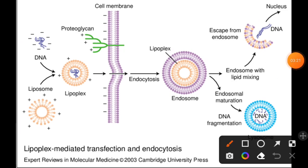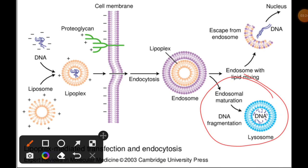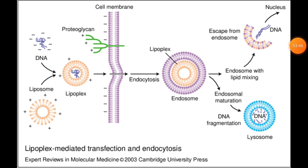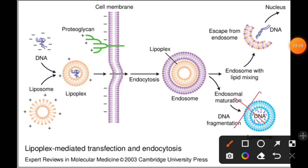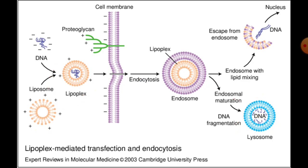To address the risk of lysosomal degradation, it is often suggested to treat the particular cells where we are transferring the lipoplex with cytochalasin B, colchicine, and chloroquine. These compounds will prevent the lysosomal pathway, thereby protecting the gene of interest from degradation.